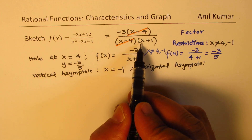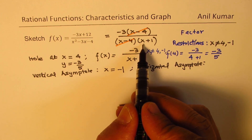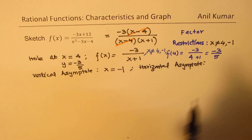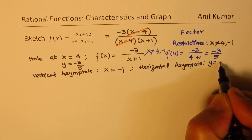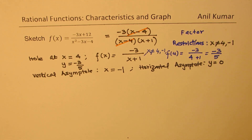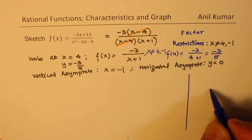Since we have minus 3 over (x plus 1), when x is very large the denominator becomes very large and the expression approaches 0. So the horizontal asymptote is y equals 0. So we have the basic structure for the rational function.